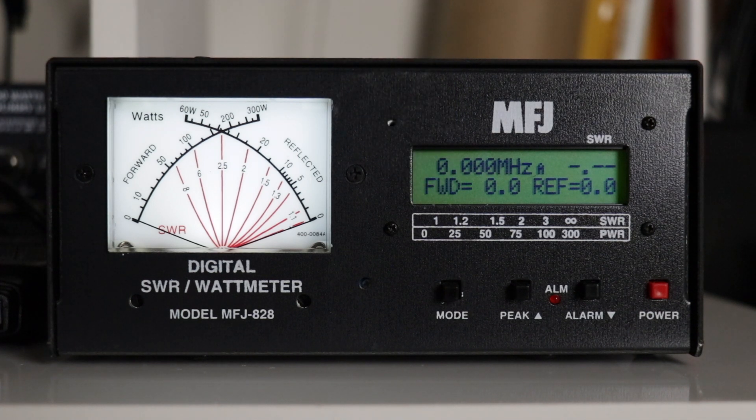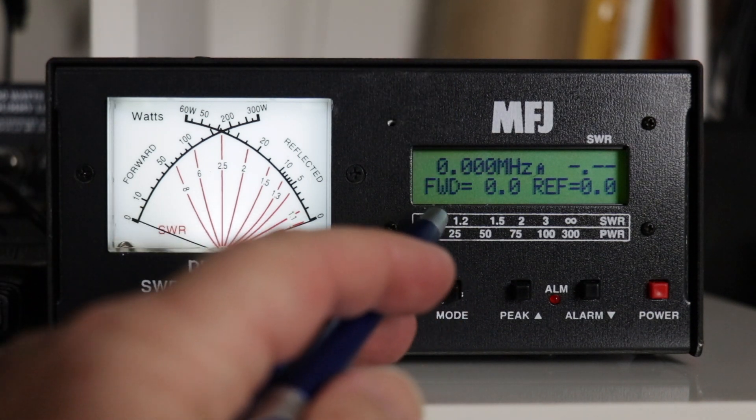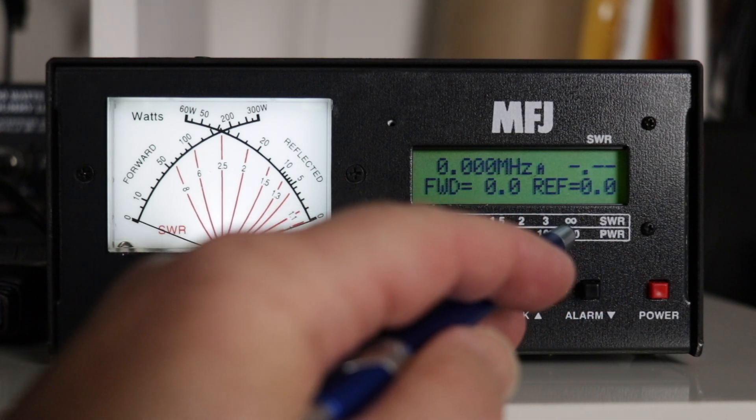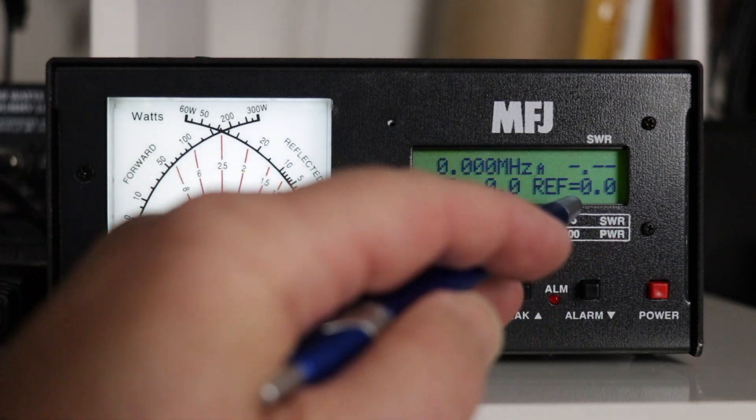And that can actually be changed to use either bar graphs, which is where these scales would come in, showing your power and your SWR.